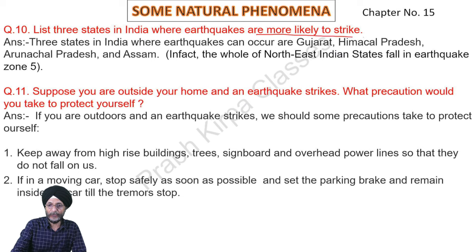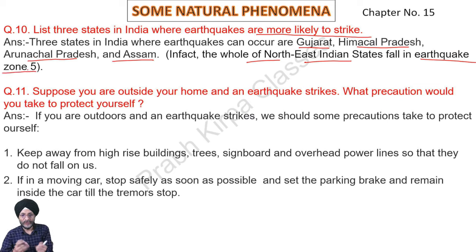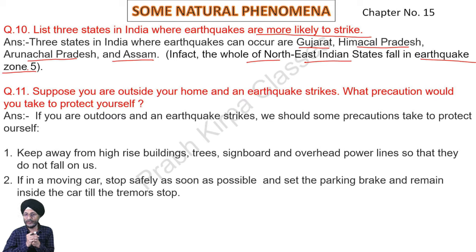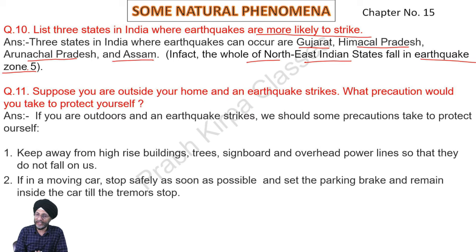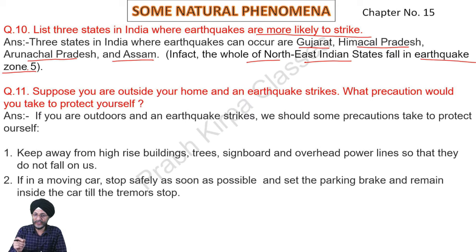Question 10: List three states in India where earthquakes are more likely to occur. Three states are Gujarat, Himachal Pradesh, Arunachal Pradesh, and Assam. The whole of North East Indian states fall in earthquake zone 5, including Arunachal Pradesh, Assam, Mizoram, Meghalaya, and Tripura. Some textbooks mention Jammu and Kashmir, but Jammu and Kashmir is no longer a state — it became a Union Territory about 2-3 years ago, so it should not be listed among states prone to earthquakes.